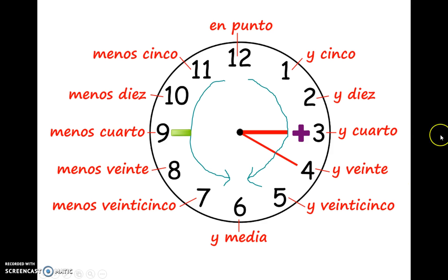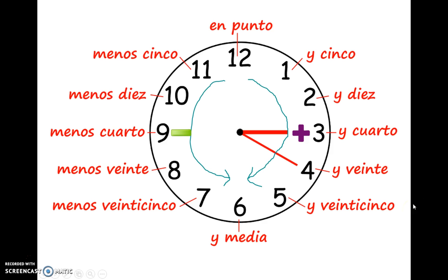Now, the minutes are a little more complicated, but most of them are pretty easy. Y cinco — and five minutes. Y diez — and ten minutes. Y veinte — and twenty minutes. Y veinticinco — and twenty-five minutes. However, a few of them are special. Y cuarto means 'and a quarter' — a quarter of this round clock, a quarter of an hour, fifteen minutes. Y cuarto means whatever hour and fifteen.